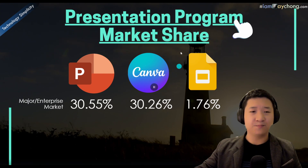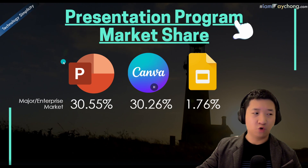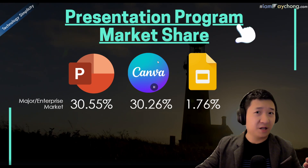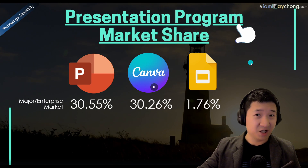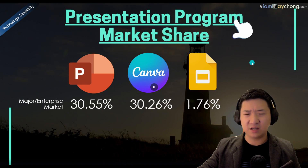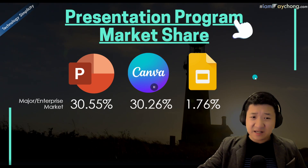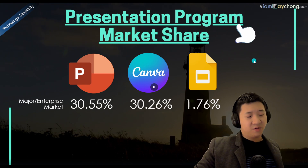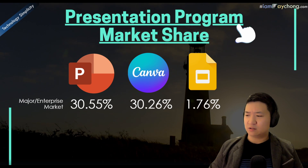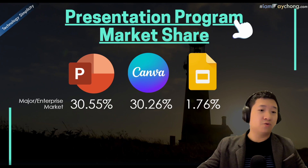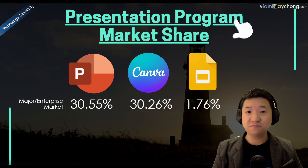Now let's look at market share in the presentation program space. At first I thought Microsoft PowerPoint would dominate, but actually Canva has risen to about 30%, while Google Slides is at about 1.76% — because users tend to use Google Docs and Google Sheets more than Google Slides. All three together total around 60-plus percent, so there are quite a number of other presentation programs out there — like Prezi, SlideShare, and others.